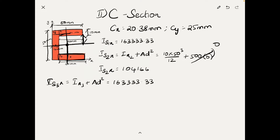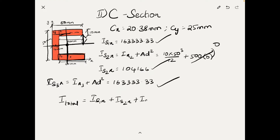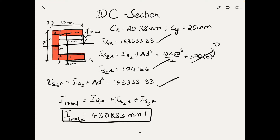Now that we have the individual moment of inertia for each section, we add all three together to get the total moment of inertia of the C-section along the X axis: I_total_X = I_S1X + I_S2X + I_S3X = 430,833 mm⁴.